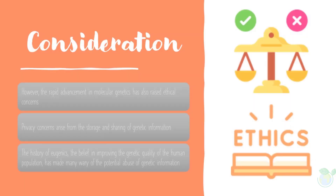Ethics considerations. However, the rapid advancement in molecular genetics has also raised ethical concerns. Gene editing — the ability to modify the genetic code of an organism — raises questions about the use of this technology to enhance human traits. Privacy concerns arise from the storage and sharing of genetic information. The history of eugenics, the belief in improving the genetic quality of the human population, has made many wary of the potential abuse of genetic information.